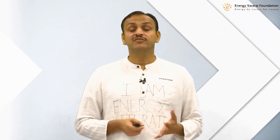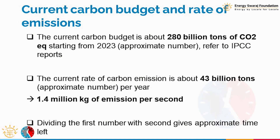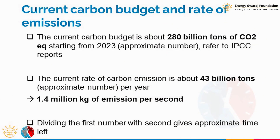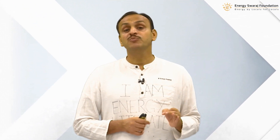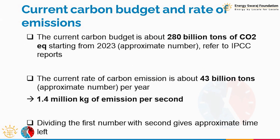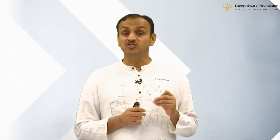The rate of emission is about 43 billion tons of carbon dioxide equivalent per year — because carbon dioxide is not the only greenhouse gas; methane is another. So the equivalent of all greenhouse gases is represented here at about 43 billion tons. To give you a sense of magnitude, 43 billion tons per year works out to approximately 1.4 million kilograms of carbon dioxide emitted every single second.